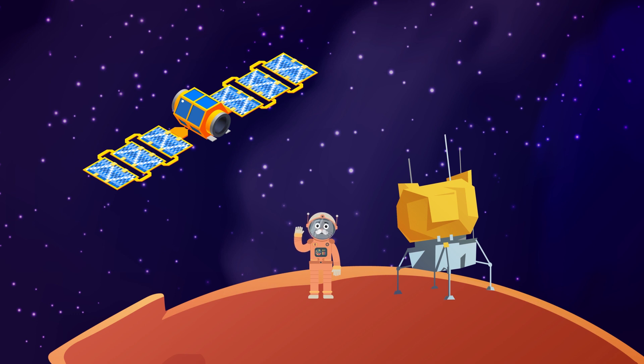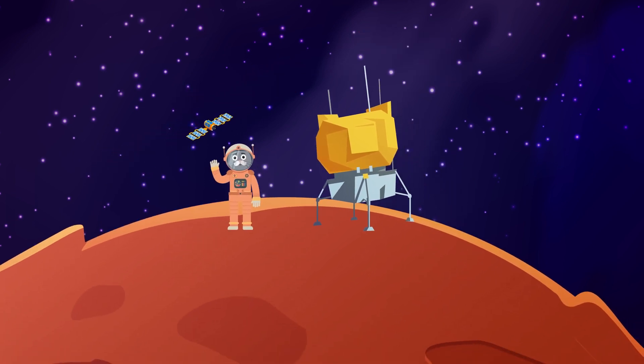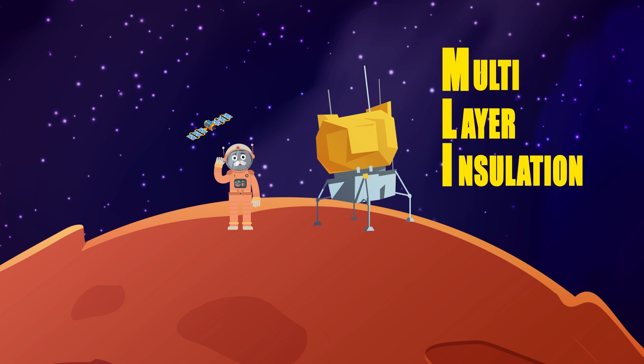Even though it looks as if the satellites are coated with gold, they aren't. It is actually the outermost layer of what is called MLI, or multi-layer insulation.